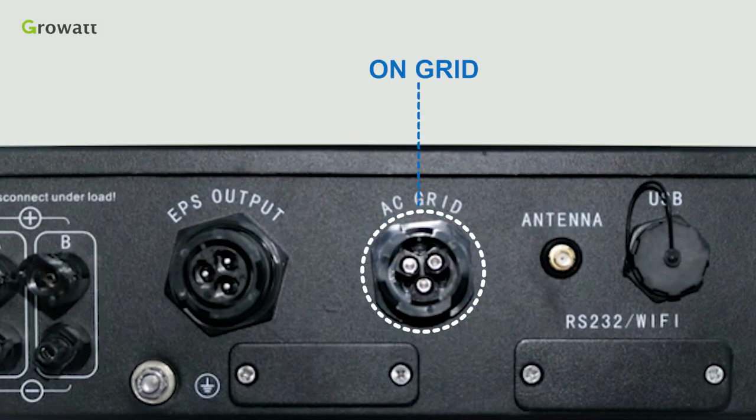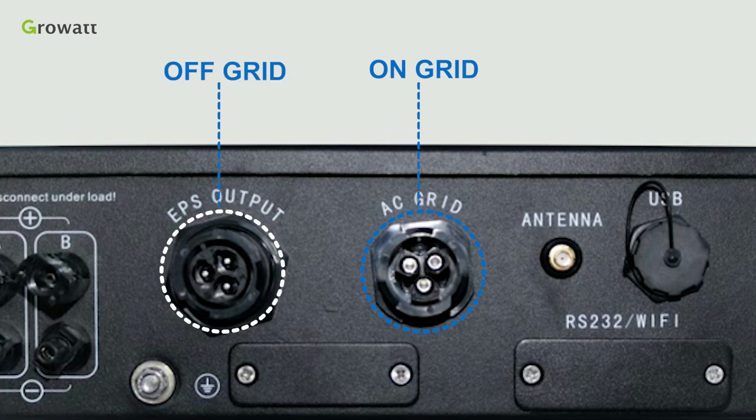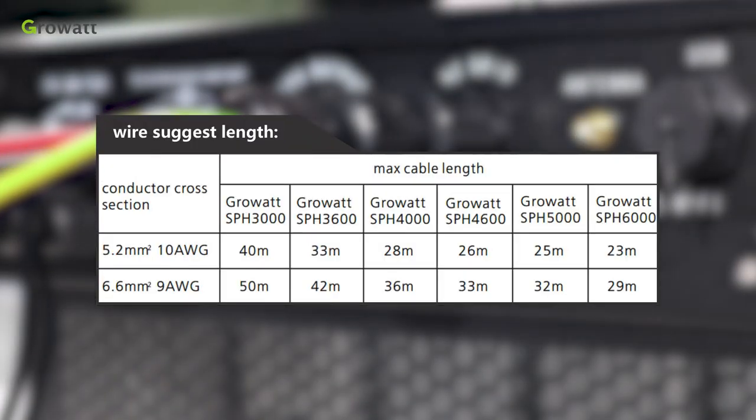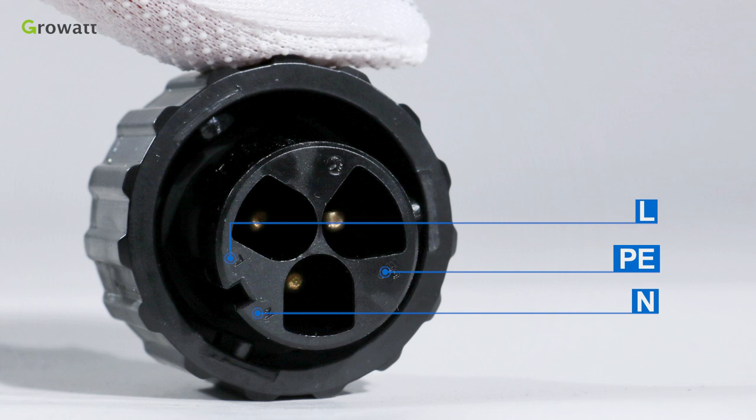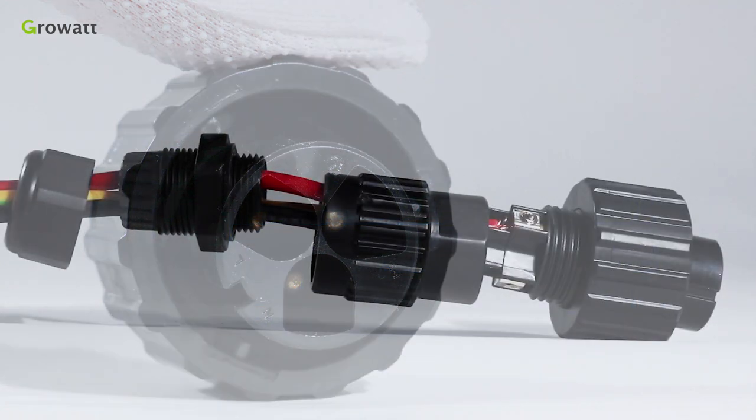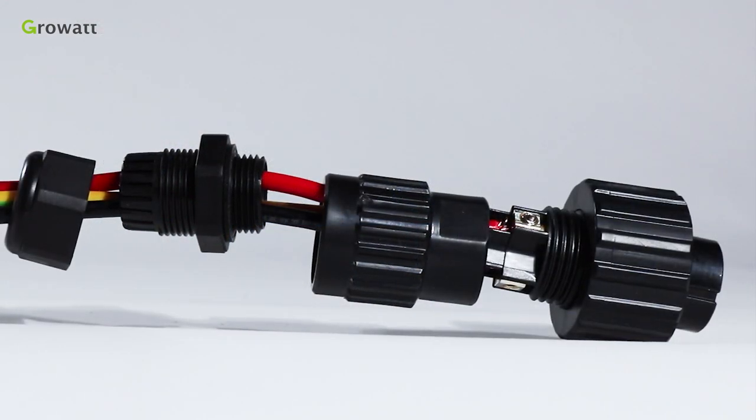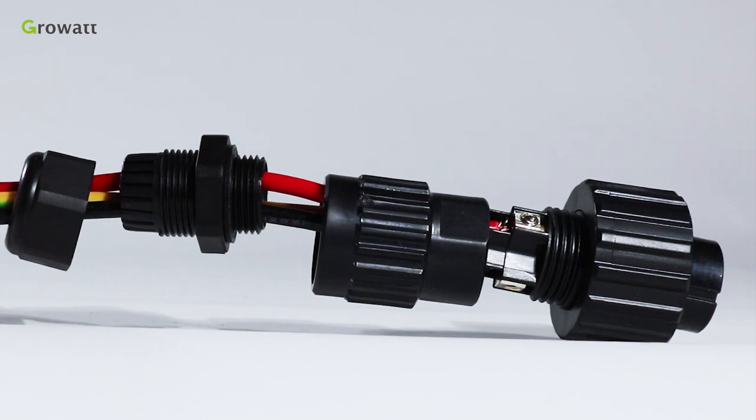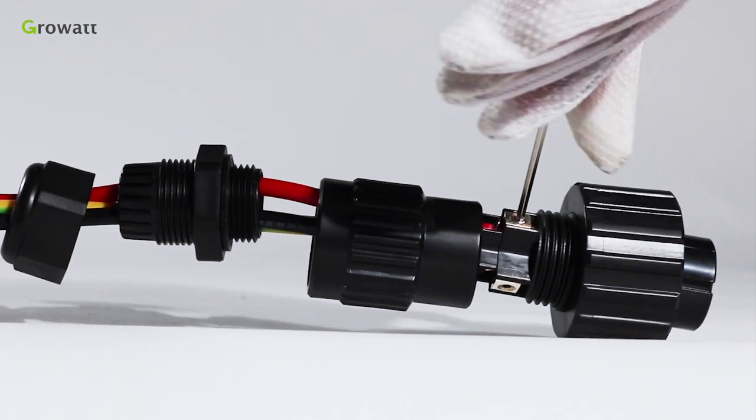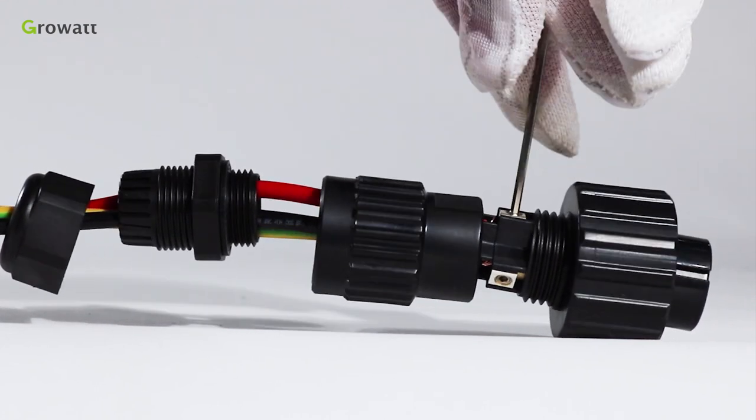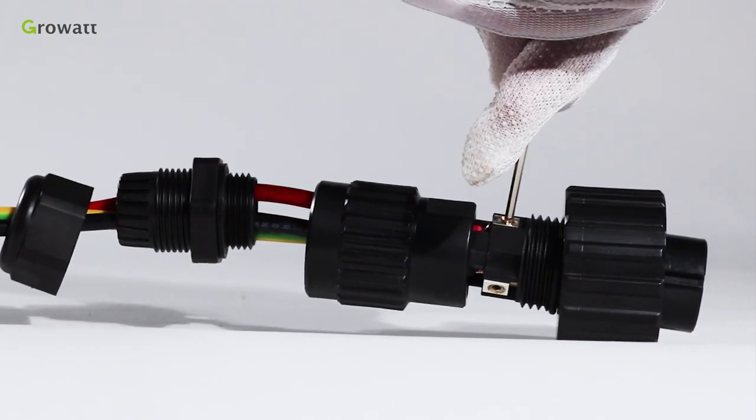SPH has an AC grid terminal and EPS output terminal. We can follow this AC wire suggestion to choose suitable cables. First of all, please confirm the L, N, PE port of the connection terminal and thread cables through pressure screw, seal ring, threaded sleeve in sequence. Insert cables into the connection terminal according to polarities indicated on it and tighten the screws.